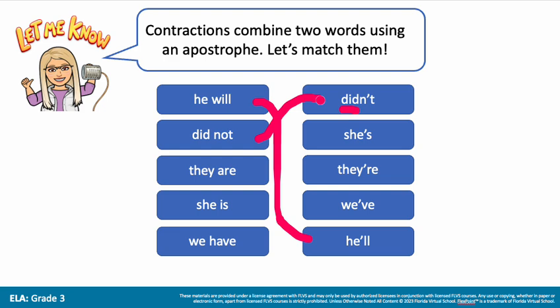'They are' — let's see if you can figure out the contraction that would match that one. Hopefully you said 'they're.' 'They' and then the A is removed and the apostrophe goes between the Y and the RE. Next, 'she is' becomes 'she's.' Finally, 'we have' becomes 'we've.' So we know that contractions are when we take two words and combine them using an apostrophe.